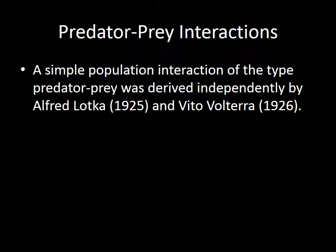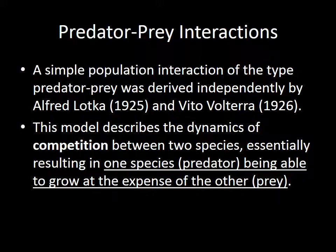A simple population interaction of the predator-prey type was derived independently by two scientists — Alfred Lotka in the United States and Vito Volterra in Italy — at about the same time. The model both came up with describes the dynamics of competition between two species, where one species is able to grow at the expense of the other. The species that grows at the expense of the other we call the predator, and the one that is grown upon we call the prey.